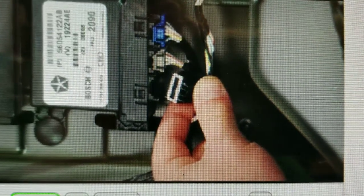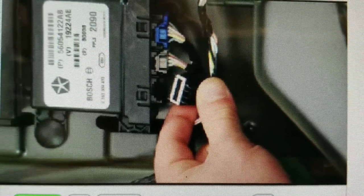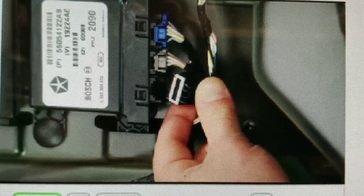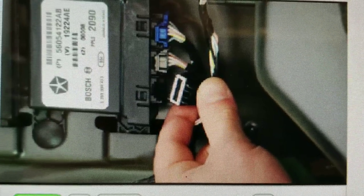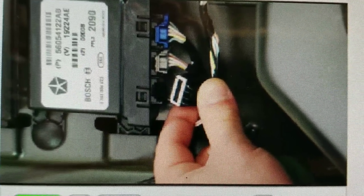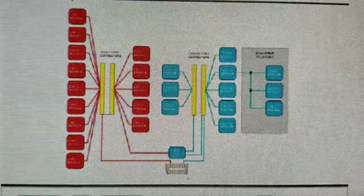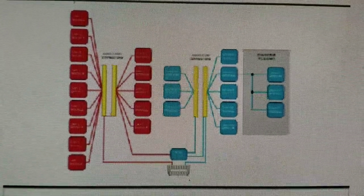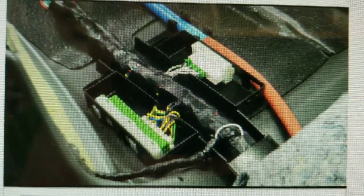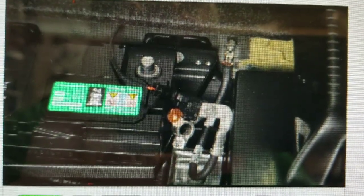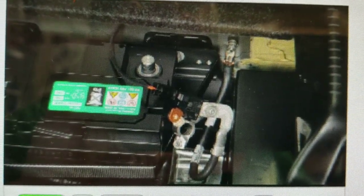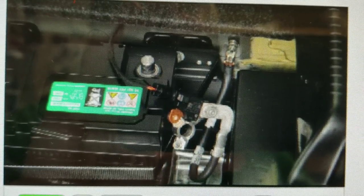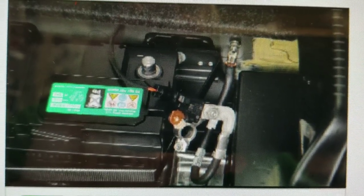If disconnecting an individual module does affect voltage, you can isolate the cause further by disconnecting just the module while leaving the jumper harness connected at the star connector. An alternative method of troubleshooting modules that are not communicating is resistance checks at the DLC and star connectors. You will need to disconnect the battery to perform these checks. Let's examine how these checks work in isolating an open.